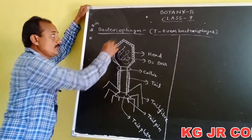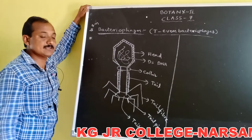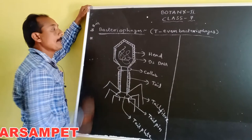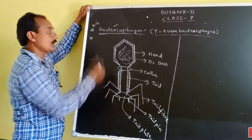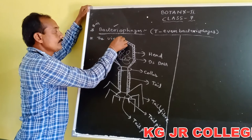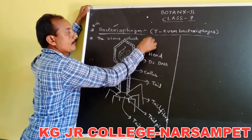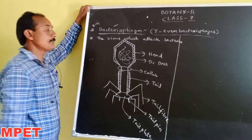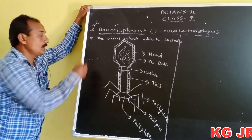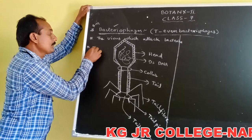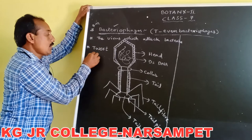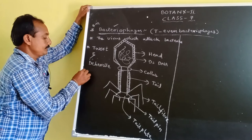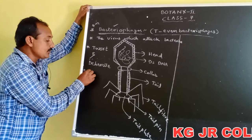This is the structure of bacteriophage. Bacteriophage means it is a virus — the virus which attacks bacteria is called bacteriophage. That is the definition of bacteriophage. Bacteriophage was discovered by Twart and D'Herelle. And it is a tadpole-shaped virus.